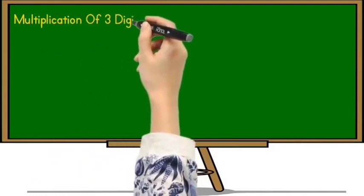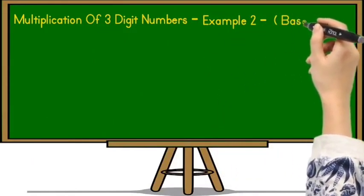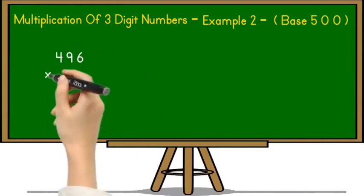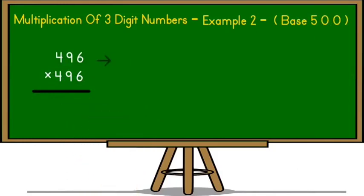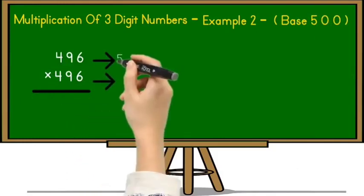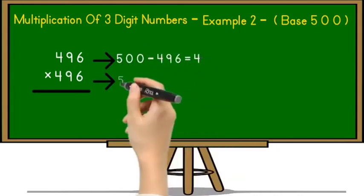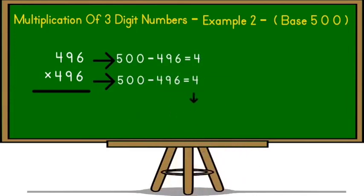Let's take example number 2 for multiplication of 3 digit number whose base is 500. So here I have taken example of 496 multiplied by 496. So for 496 we have base 500. So first of all let us find out complement of it. So 500 minus 496 is equal to 4. So second time also we have to do the same procedure 500 minus 496 is equal to 4.